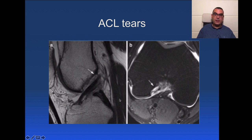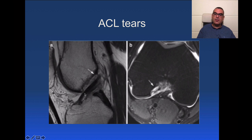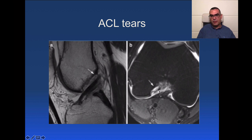Regarding ACL tears: axial images are of extreme importance. On a sagittal proton density without fat suppression, the ACL may appear in normal course with relatively homogeneous hypointense signal, but the femoral attachment may not be clearly identified. When you see the axial image, there is clearly a complete tear of the ACL femoral attachment — the normal hypointensity is absent, replaced by fluid signal, ill-definition, and surrounding edema.